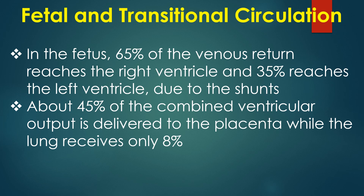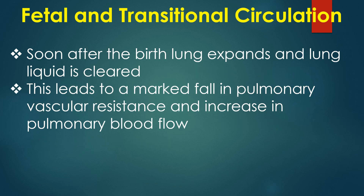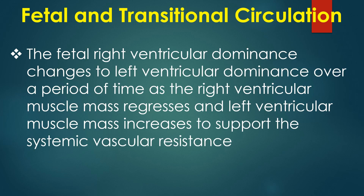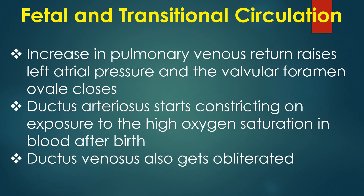In the fetus, 65% of venous return reaches the right ventricle and 35% reaches the left ventricle due to the shunts. About 45% of combined ventricular output is delivered to the placenta while the lung receives only 8%. Soon after birth, the lung expands and lung liquid is cleared, leading to a marked fall in pulmonary vascular resistance and increase in pulmonary blood flow. The fetal right ventricular dominance changes to left ventricular dominance over time as right ventricular mass regresses and left ventricular muscle mass increases to support systemic vascular resistance.